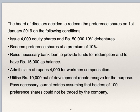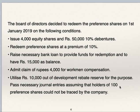Utilize Rs. 10,000 out of development rebate reserve for the purpose. Development rebate reserve is given; out of that Rs. 10,000 can be used for redemption, i.e. transfer to CRR. Pass necessary journal entries assuming that holders of 100 preference shares could not be traced by the company. There was one preference shareholder holding 100 shares who could not be traced, so it is not possible for the company to pay his dues. First I will show you some working notes so that it will be easy for you to understand the journal entries.